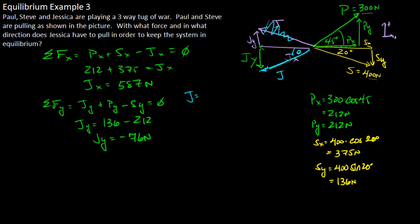So Jessica's force, we can just use the Pythagorean theorem. It's going to be, so her force squared is going to be her x-force squared plus her y-force squared. So this will be 587 squared plus negative 76 squared. So her force, if we do the math out, is going to be equal to about 592 newtons.